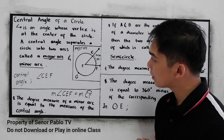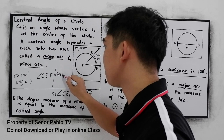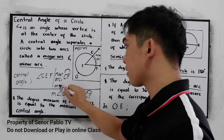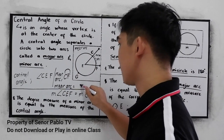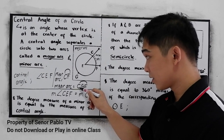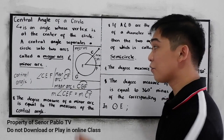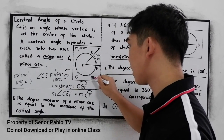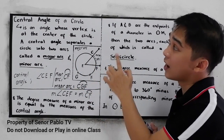So let us name the different arcs here. The minor arc — let us name it CF. And the major arc — that is CGF. We can name a major arc using three points: CGF. And if we have another point, let's say H, it can also be named as CHF. But it will still be a major arc.